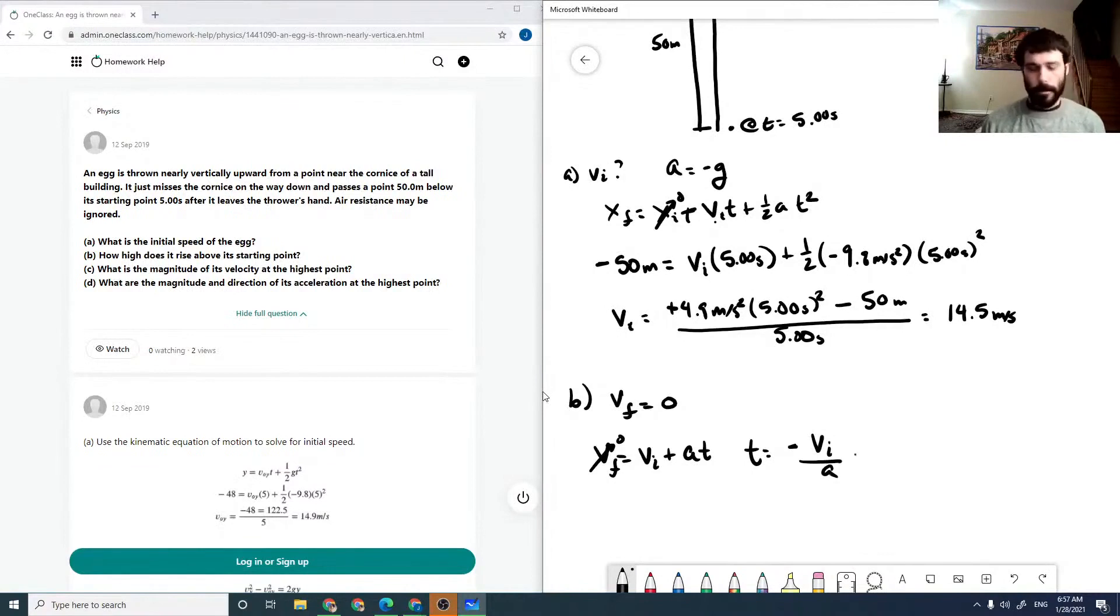Which is minus 14.5 meters per second over minus 9.8 meters per second squared. Our negatives will cancel and we get 1.480 seconds. And so we can use this to solve in our xf expression.